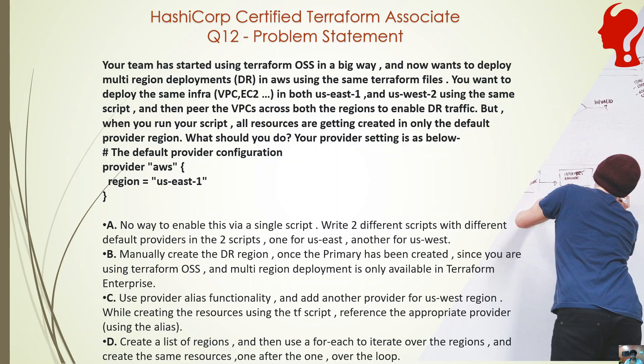When you run your script, all resources are getting created only in the default provider region. The current provider setting is: provider AWS, region = us-east-1. This is the most common default provider setting. In this setting you are choosing the region as US-East-1, but what you want is the same Terraform script to be able to create resources both in US-East-1 and also in another region.